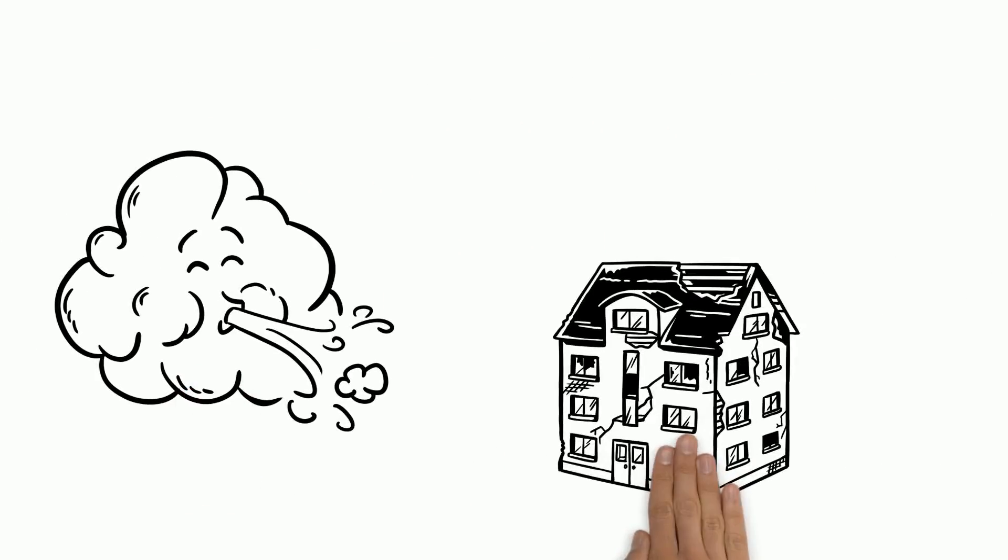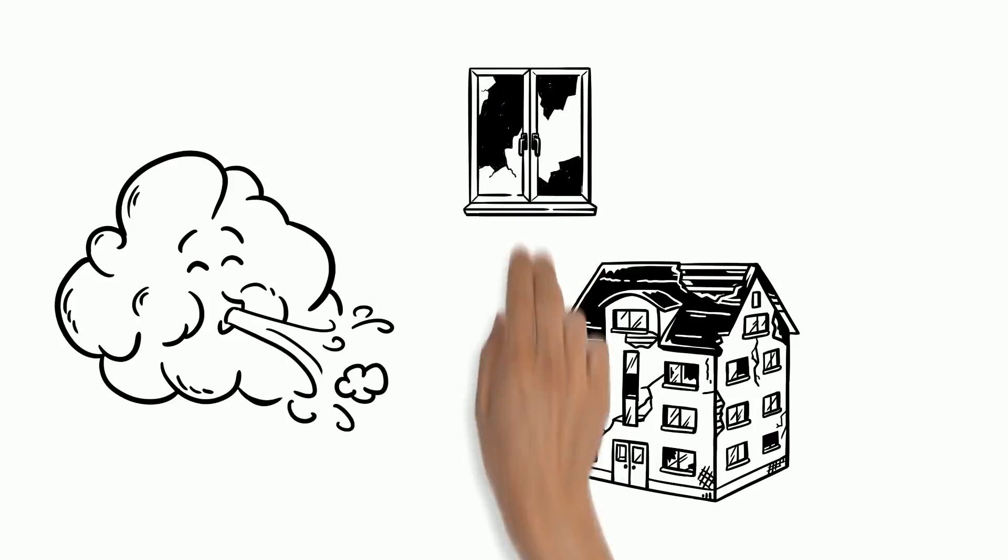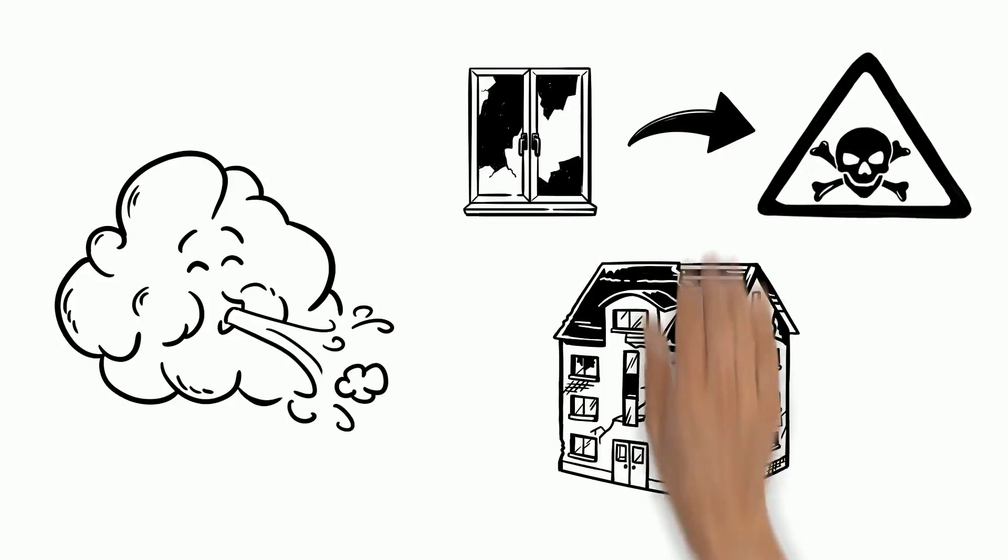Wind can cause most of the total damages of a storm. Broken wreckage from destroyed objects can become deadly flying pieces.